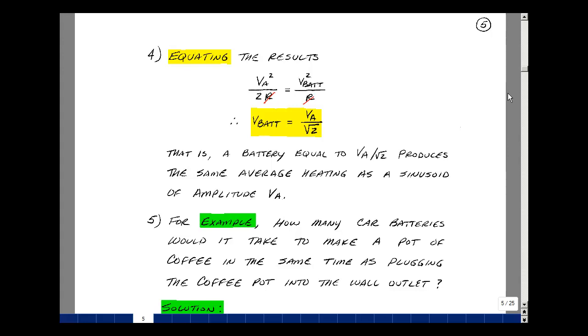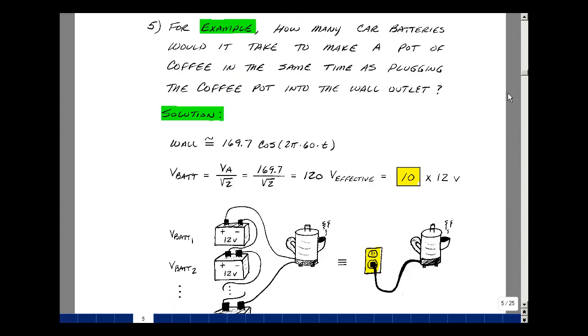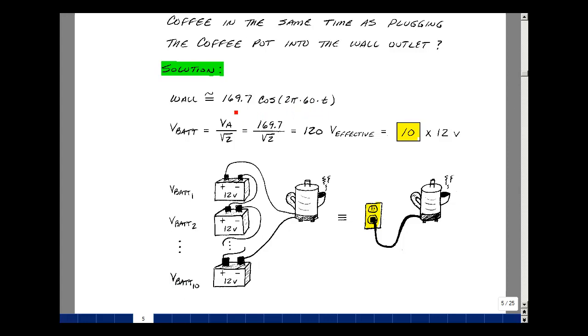Let me do another example to illustrate this a little bit better. Suppose I have a pot of coffee. How many car batteries would it take to make a pot of coffee in the same amount of time as plugging that same coffee pot into the wall outlet? Suppose the wall outlet is 169.7 times the cosine of 2 pi 60 hertz times T. Then from our formula above, we would take the amplitude and divide it by the square root of 2. That turns out to be 120 volts. We sometimes call this the effective voltage because it produces the same heating effect.